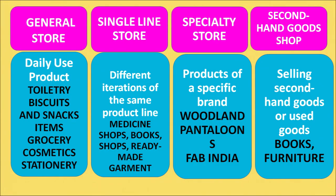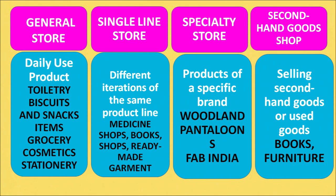General stores contain products for daily use such as toiletries, biscuits, snacks, grocery, cosmetics, or stationery. Single line stores contain different iterations of the same product line — for example, a bookshop or a ready-made garment shop. Specialty stores carry a variety of product lines but all from a specific brand — for example, a Woodland showroom or a Fab India showroom. Second-hand goods shops sell products that are used or second-hand, such as certain books or furniture.